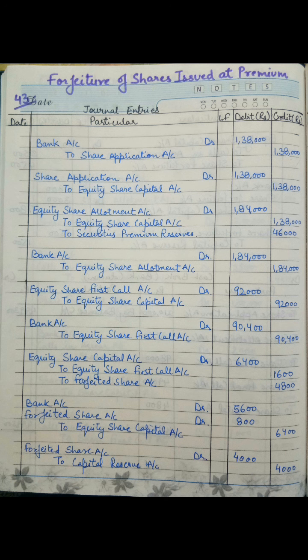The next entry is the receipt of first call money: Bank Account debit to Equity Share First Call Account. A shareholder holding 800 shares failed to pay the first call money. The amount not received is 800 into 2 rupees, which is 1,600 rupees. So the amount actually received by the company is 92,000 minus 1,600, which comes to 90,400 rupees.